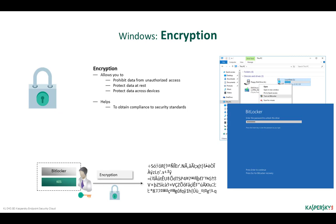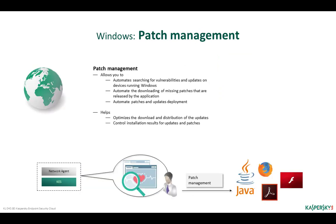Kaspersky Endpoint Security Cloud allows you to configure encryption of managed devices running Windows and Mac OS. Encryption prevents other users from gaining unauthorized access to data stored on the user's device. Devices running Windows are encrypted using BitLocker Drive Encryption, a technology that is part of the Windows operating system. Kaspersky Endpoint Security for Windows encrypts all logical partitions of hard drives simultaneously, and recovery keys are stored in the Kaspersky Endpoint Security Cloud infrastructure. The encryption management feature, as well as the patch management feature for installing software patches that fix vulnerabilities on managed Windows devices, are available only under a Kaspersky Endpoint Security Cloud Plus license.